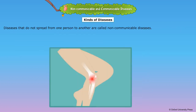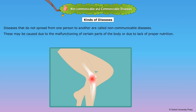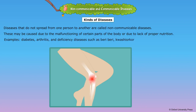Kinds of diseases. Diseases that do not spread from one person to another are called non-communicable diseases. These may be caused due to the malfunctioning of certain parts of the body or due to lack of proper nutrition. Examples: diabetes, arthritis, and deficiency diseases such as beriberi, scurvy, or kwashiorkor.